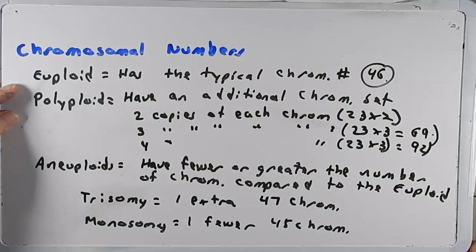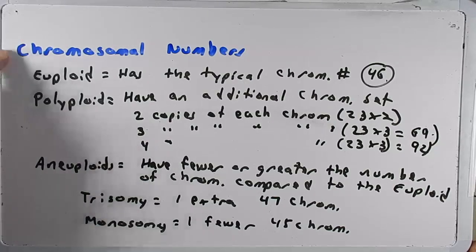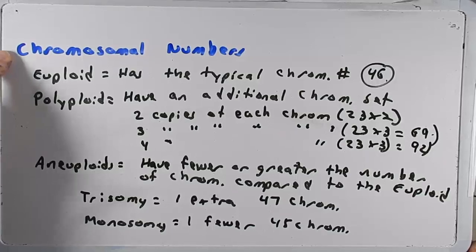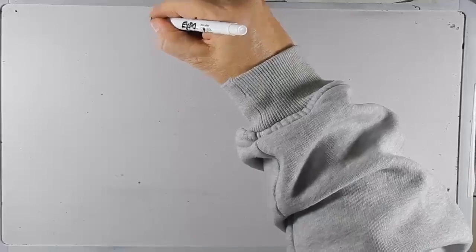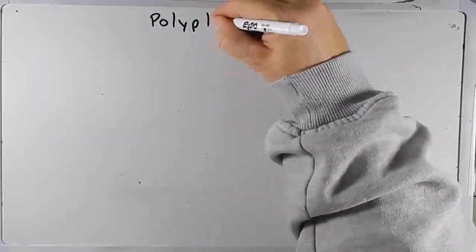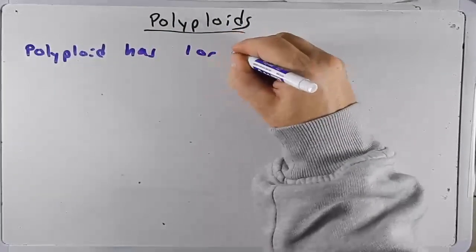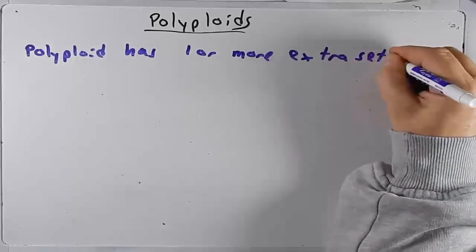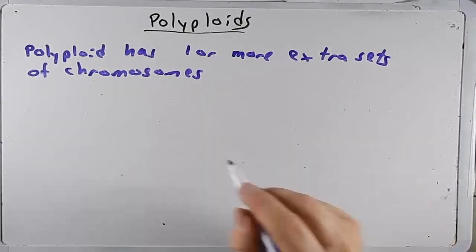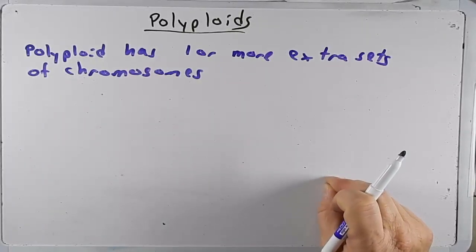Now I'd like to spend some time talking about polyploids and aneuploids, and then talk about things that are not chromosomal number problems but chromosomal structural problems. Let's start with polyploids. A polyploid has one or more extra sets of chromosomes. Unlike aneuploids, polyploids have an extra chromosome of each chromosome — so instead of having two of every chromosome, they might have three or four of every chromosome.